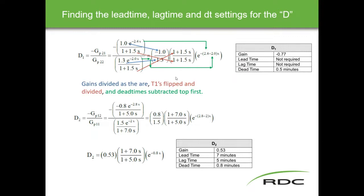The process for finding lead time, lag time, and dead time — hopefully less messy this time with color-coded arrows. Gains are divided: the upper gain divided by the lower gain, so top over bottom. The T1 times get flipped — top goes to bottom and bottom goes to top. Not a great example because of the exact same number here, but in any other case they would be obviously flipped. Dead times are subtracted top first: 2.4 minus 2.